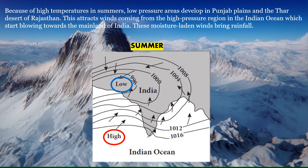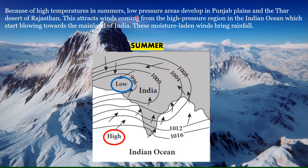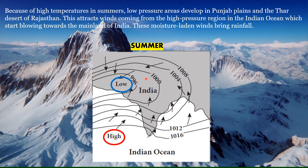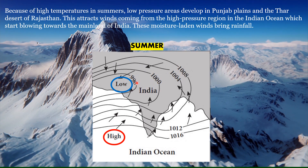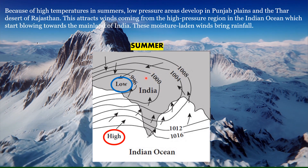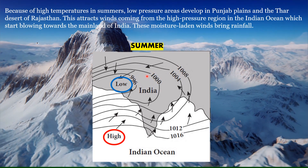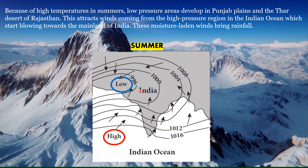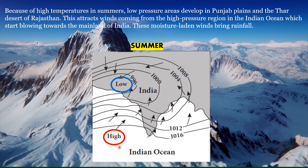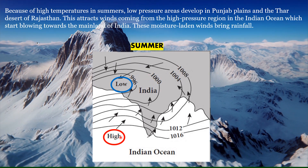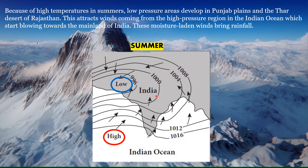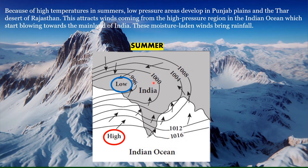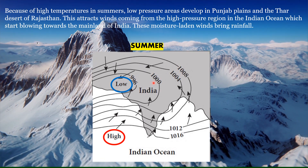Because of high temperatures in summer, low pressure areas develop in the Punjab plains and the Thar Desert of Rajasthan — the north and north-western parts of India. This attracts winds from the high pressure region in the Indian Ocean, which blow towards the mainland of India. These moisture-laden winds bring rainfall to India.